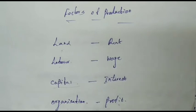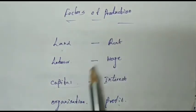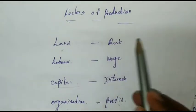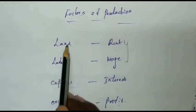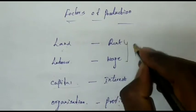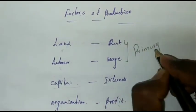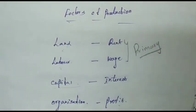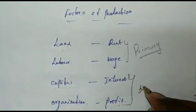So these are the factors of production. Land and labor are called primary factors. Capital and organizations are called secondary factors.